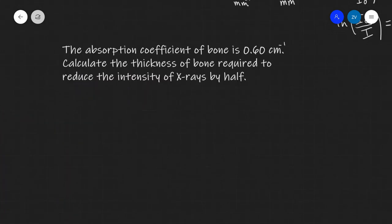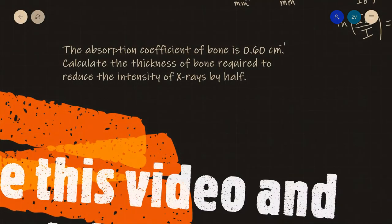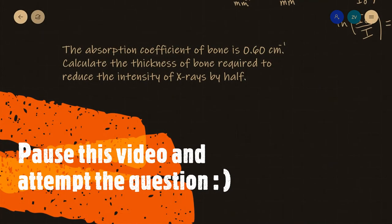Let's have a go at one more question which is very typical. The absorption coefficient of bone is 0.6 cm⁻¹. Calculate the thickness of bone required to reduce the intensity of the x-rays by a factor of a half. And this will be a perfect opportunity for you guys to pause this video and attempt this question.